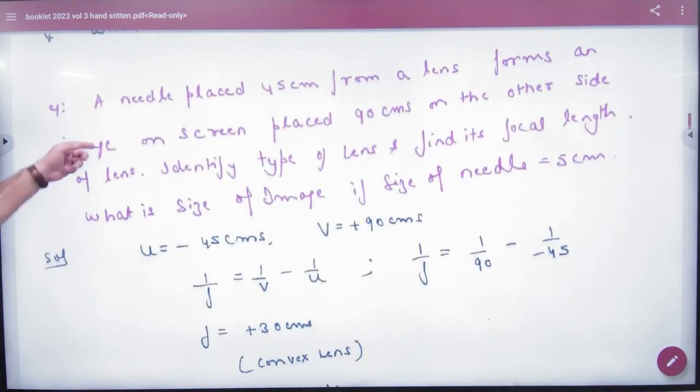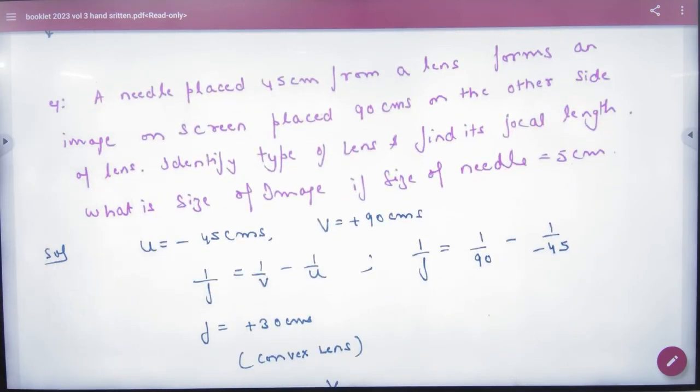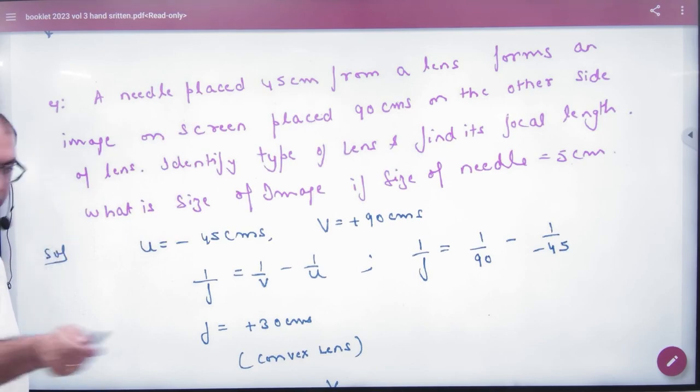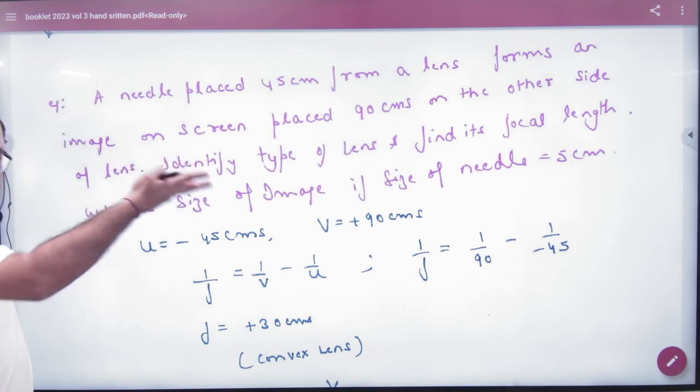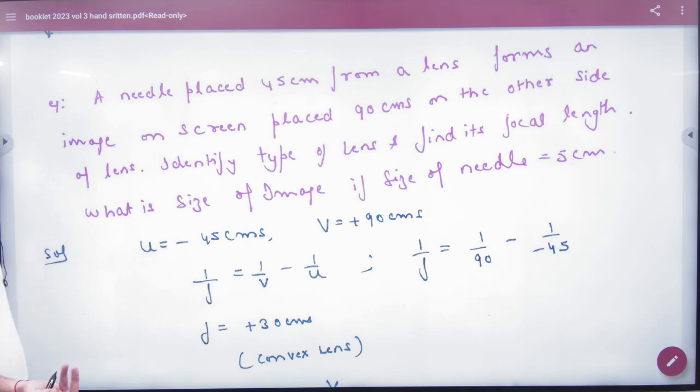Look at this question: a needle is placed 45 cm from a lens and forms an image on a screen placed 90 cm on the other side. What is given? U is the object distance. In lens, U is always negative, so U is negative 45 cm. The image forms on the screen, so which image becomes real? V is positive. I will tell you this is a convex lens because it forms a real image. Then find the focal length.